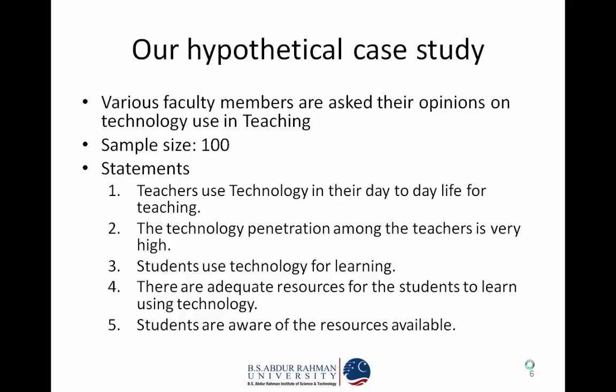Then there are three subjective factors. Subjective factor number one: students use technology for learning — teachers give their perception on whether students use technology for learning or not. Then, whether there are adequate resources for teachers and students to learn using technology, and whether students are aware of the resources that are available. So totally there are five factors, and these are survey responses tabulated from the teachers.